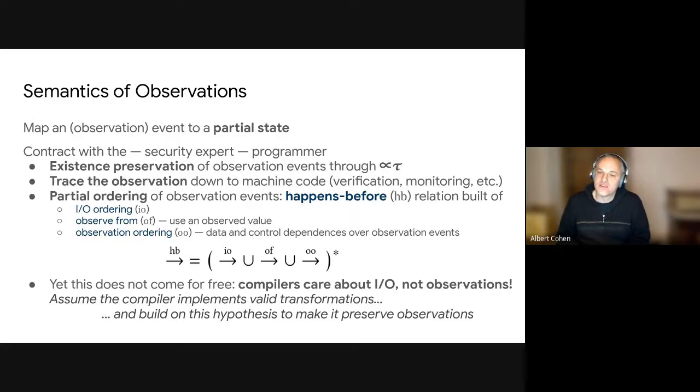We want to be able to trace the observation down to matching code, so this is very important for some applications such as testing, monitoring, verification of the binary. And we also want, as I mentioned earlier, to preserve partial ordering constraints. So the same way we have ordering on I/O, we want also to preserve ordering on observations. And this is important, because programmers, as I said earlier, want to make sure that some observations have to follow some partial ordering constraints.